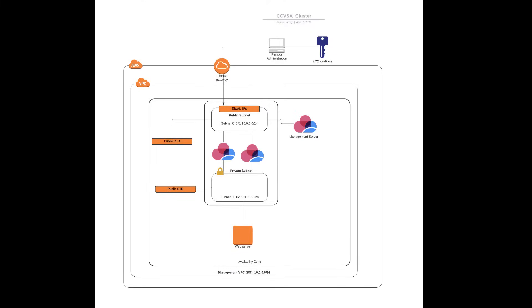Hey everybody, today I'll be showing you how to deploy Check Point CloudGuard Gateway cluster on AWS. We'll be deploying a cluster of firewalls that consists of two members — one active, one passive — and a management server and a web server that will be securely exposed to the internet. I assume that you have created a VPC for this lab with two subnets (one private, one public), two route tables, and the required access keys for EC2 instances.